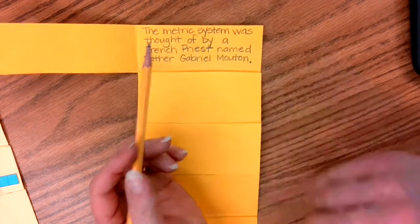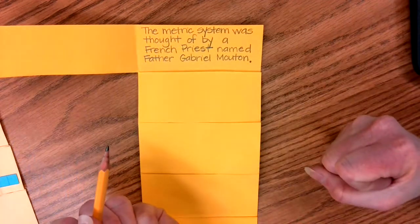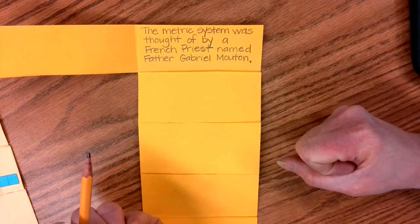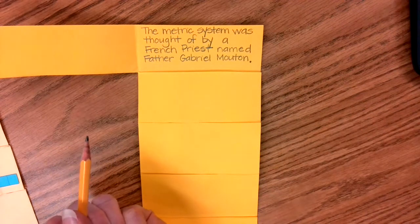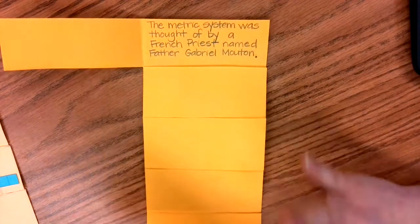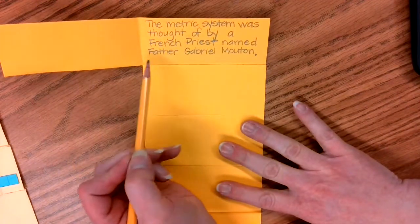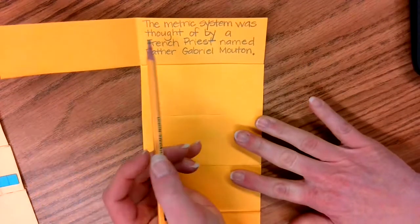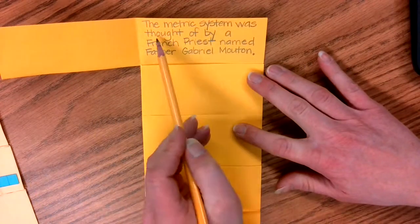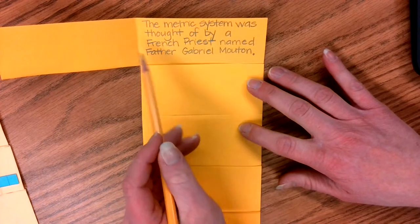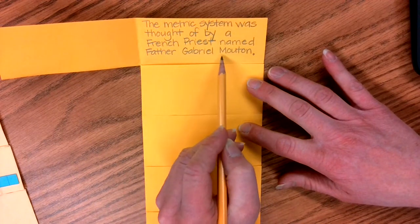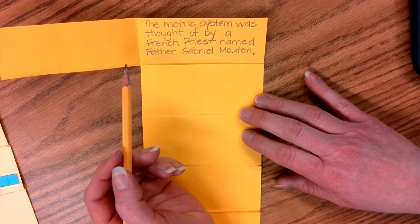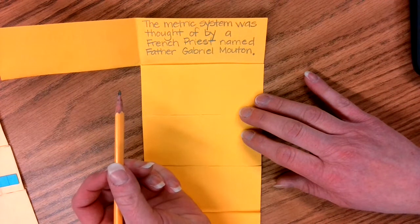So a priest is someone in the church. And they didn't have set ways to measure things and it was a problem. That's kind of like in that King's book, the book about the King's foot. So he came up with a standard system that everyone could use. So the metric system was thought of by a French priest named Father Gabriel Mouton. So hit pause if you need more time to write that down.